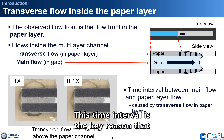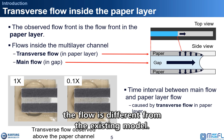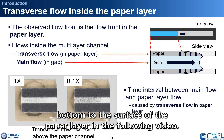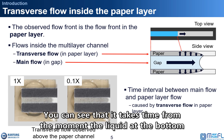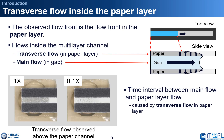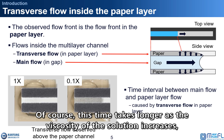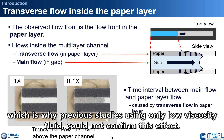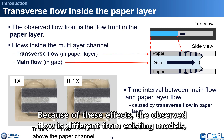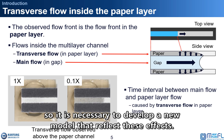This time interval is the key reason that the flow is different from the existing model. We can actually confirm how long it takes to flow from the bottom to the surface of the paper layer in the next video. You can see that it takes time from the moment the liquid at the bottom touches the paper channel to the complete wetting of the outer surface. This time takes longer as the viscosity of the solution increases, which is why a previous study using only low-viscosity fluid could not confirm these effects. Because of these effects, the observed flow is different from the existing model, so it is necessary to develop a new model to reflect these effects.